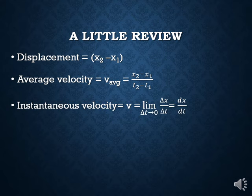With instantaneous velocity, we take the change in time as small as possible — looking at the smallest instant, what's the change in position over the change in time? If you're calculus savvy, that's the derivative of position with respect to time. If not, you can remember that it is the slope of the position versus time graph — specifically the slope at any one point, which is the tangent to that graph.